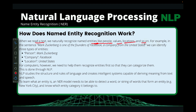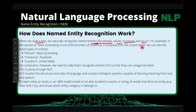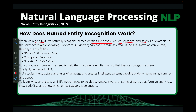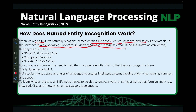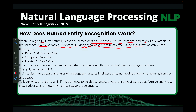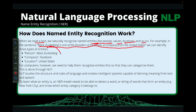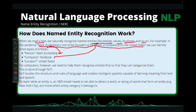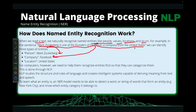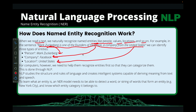For instance, if we have a sentence like: 'Mark Zuckerberg is one of the founders of Facebook, a company from the United States.' As humans, we can say that 'Mark Zuckerberg' is a name, 'Facebook' is a company, and 'United States' is a place or location. We can easily extract all of that.